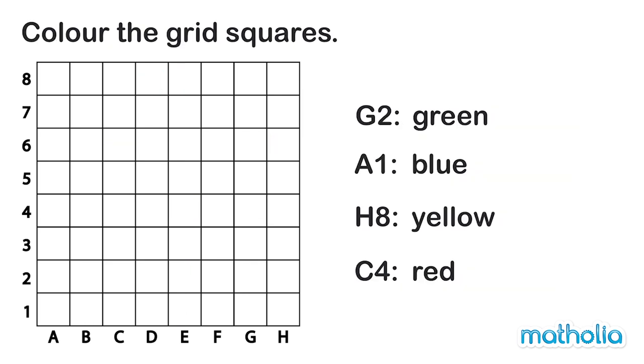Color the grid squares. Try and point to the square before I color it. The first square will be in position G2. Can you point to G2?